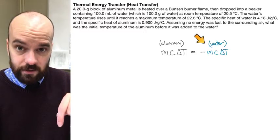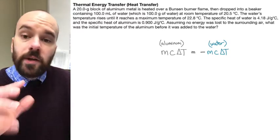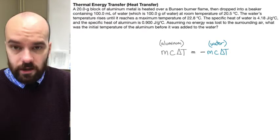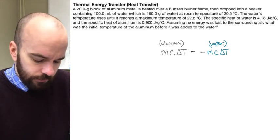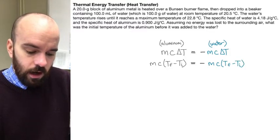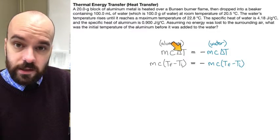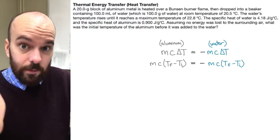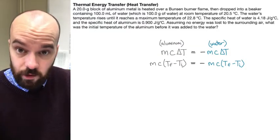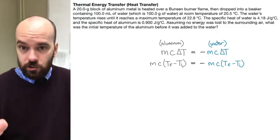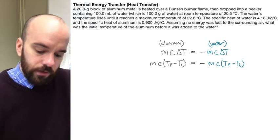Now, because the problem doesn't tell us the temperature changes directly, but tells us a final and an initial — and we'll actually have to solve for an initial here — we're going to rewrite this as MC times (final temperature minus initial temperature) on both sides. Anytime you have ∆T, you can write it as T_final minus T_initial. More generally, anytime you have the change in a variable, you can write that as the final state minus the initial state of that variable. So we rewrote the equations like that.